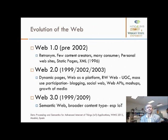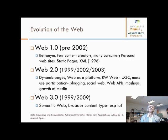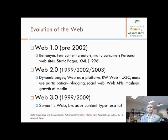As the web has evolved, people currently classify the web as Web 1.0, 2.0, and 3.0. Typically, the web as it was before 2002 is retro-named Web 1.0 — nobody called it Web 1.0 then, but when the term Web 2.0 came into vogue, people started calling the earlier web Web 1.0. In Web 1.0, a few people created content and many consumed it. There were personal websites, and then XML came about.